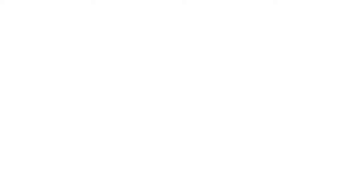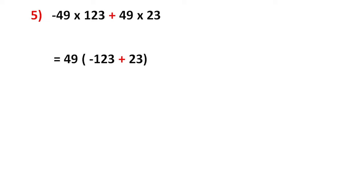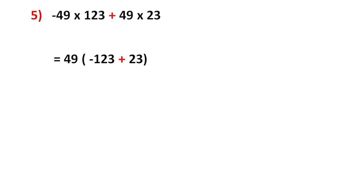Next question is −49×123 + 49×23. Here 49 is common, but in the first term it is negative and in the second term it is positive. So I am taking positive 49 outside. After taking 49 out, from the first term the remaining part is −123. So inside the bracket: −123 + 23 = −100. Therefore, 49×(−100) = −4900.